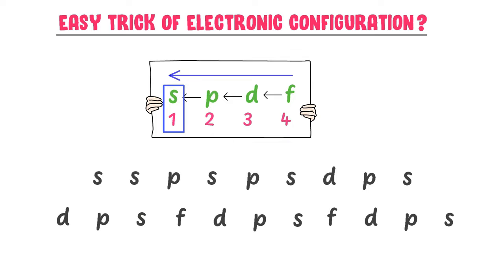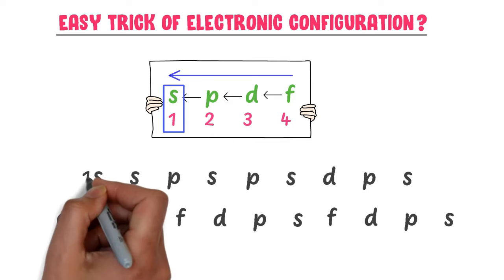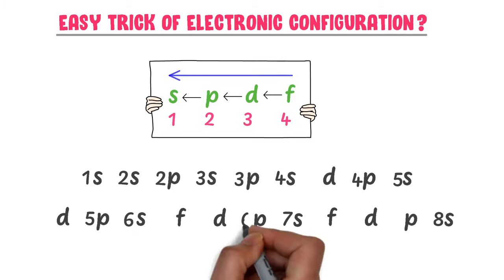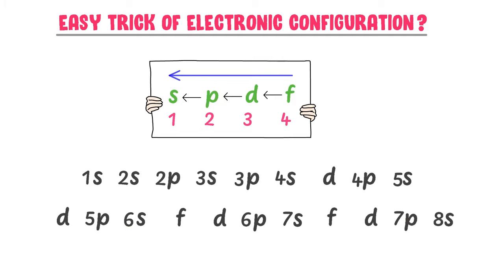Now listen carefully. S is the first orbital, so start numbering S orbitals from 1. Hence: 1S, 2S, 3S, 4S, 5S, 6S, 7S, and 8S. P is the second orbital, so start numbering P orbitals from 2. Hence: 2P, 3P, 4P, 5P, 6P, and 7P.